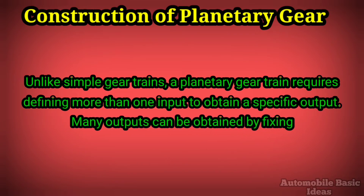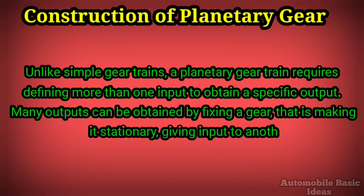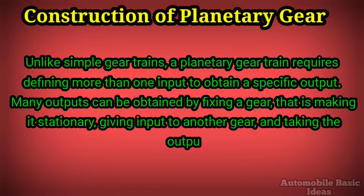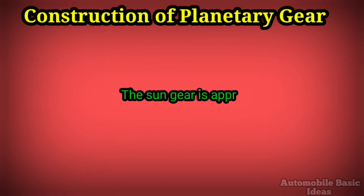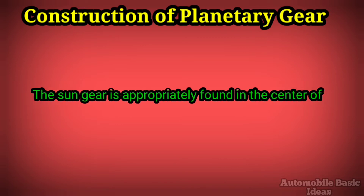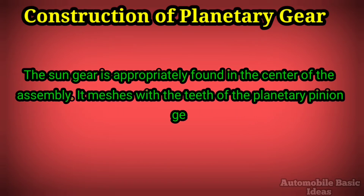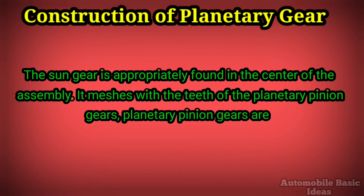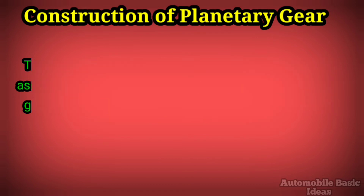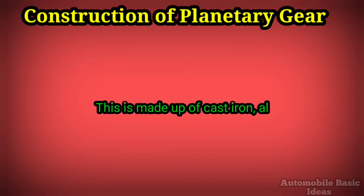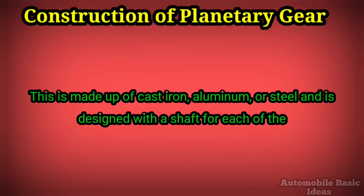Unlike simple gear trains, a planetary gear train requires defining more than one input to obtain a specific output. Many outputs can be obtained by fixing a gear — making it stationary — giving input to another gear, and taking the output from the third gear. The sun gear is found at the center of the assembly and meshes with the teeth of the planetary pinion gears. Planetary pinion gears are small gears fitted into a framework called the planetary carrier, made of cast iron, aluminum, or steel.